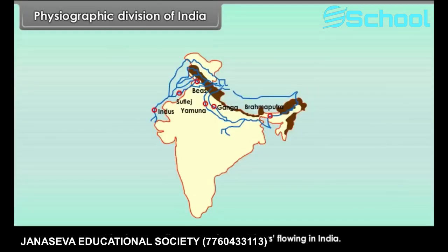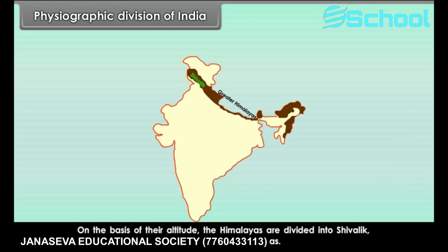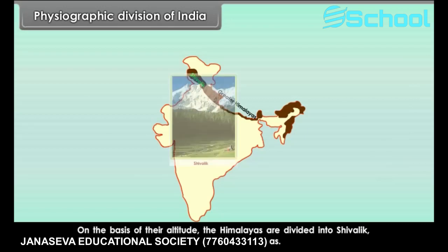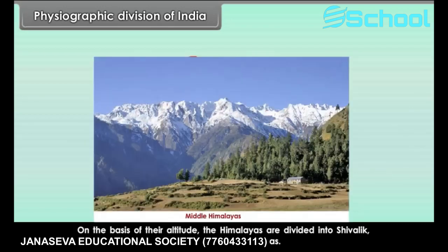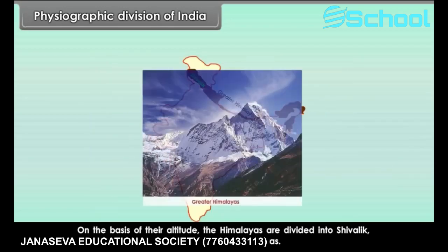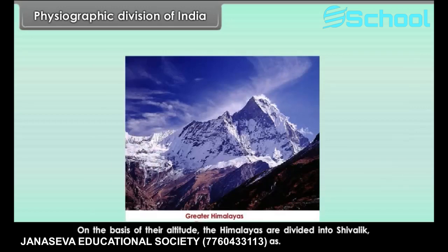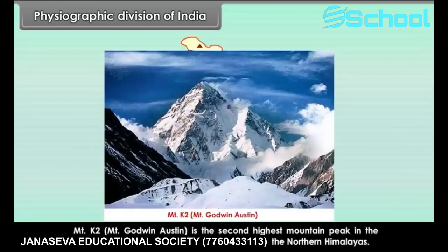The Himalayas are the source of many rivers flowing in India. On the basis of their altitude, the Himalayas are divided into the Shivalik, the Middle Himalayas, and the Greater Himalayas. Mount K2, also known as Mount Goodwin Austin, is the second highest mountain peak in the world, located in Jammu and Kashmir in the Northern Himalayas.